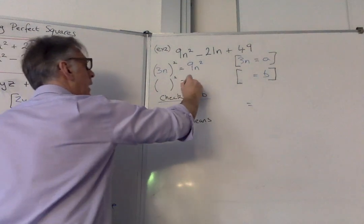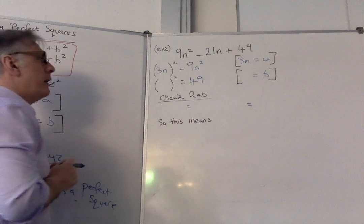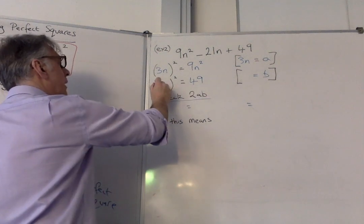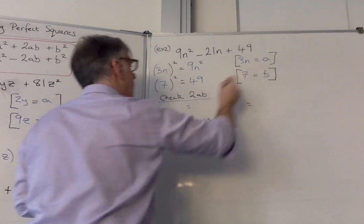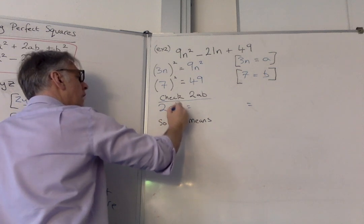So then the 49 also, we're going to test that. That should be the b² part. Square root it, I get 7. So we know that the b is 7. So again, I need to check 2ab.